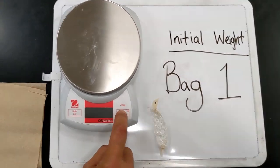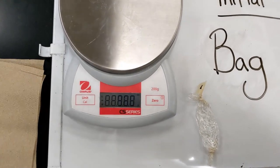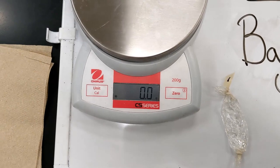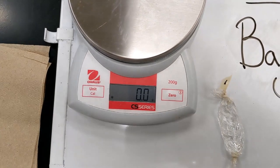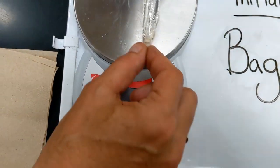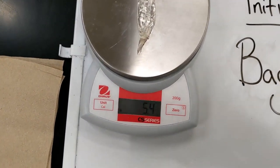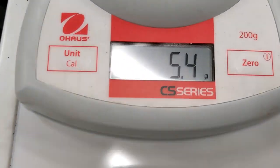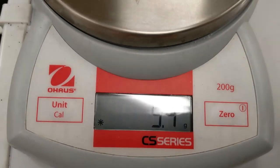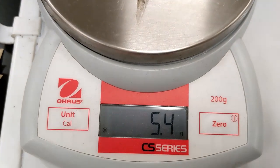Now the first thing we have to do is turn on our scale and make sure it says zero. Then we tap dry our bag and place it on there, and record the weight in grams. We will repeat this for each bag.